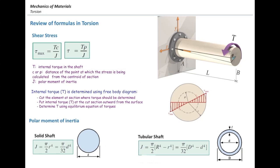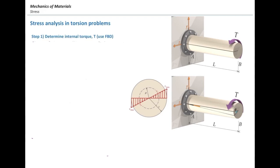If you want to determine stress, there are basically three steps. First, we need to determine how much is the internal torque in the shaft. It might be very simple, as the case we see here, so the torque would be equal to the applied T.